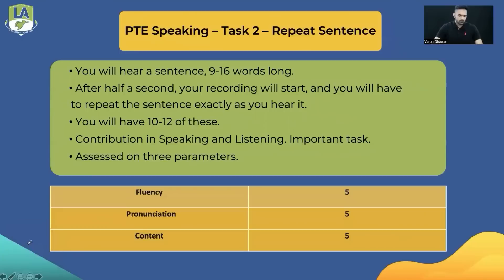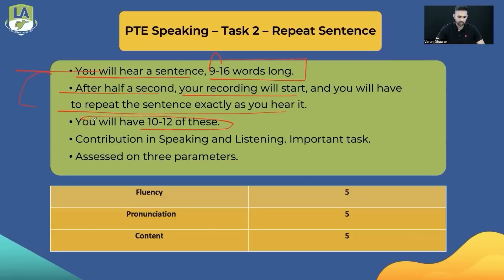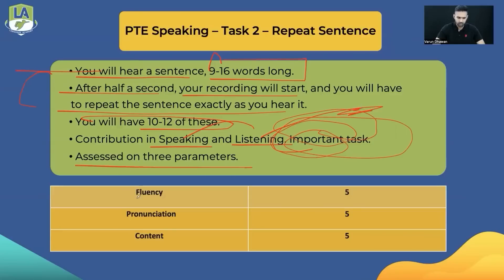Okay, just like I have told you — you will listen to a sentence which can be between 9 to 16 words, as long as possible. Just as the audio sentence finishes, recording will start within half a second, and you will repeat the sentence. Around 10-12 sentences will be done. This task contributes to both speaking and listening scores, making it a very important task. Listening scores will be significantly boosted. Three parameters will be marked: fluency, pronunciation, and content.